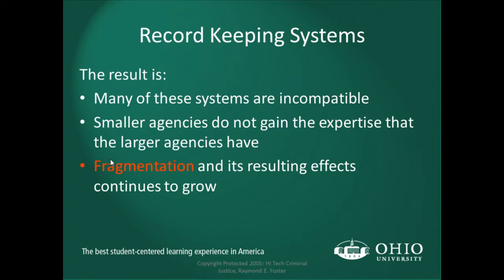The result is that many of these systems are incompatible. Smaller agencies do not gain the expertise that larger agencies have — that's clearly about money. Smaller agencies have limited budgets, so they're forced into tier two, off-the-shelf solutions. With that, a lot of their information gets compartmentalized — the evidence management system won't talk to the records management system, which won't talk to the cruiser video system. That leads to fragmentation, and the effect continues to grow. It's hard to get everything — one record, one person, one car — all in one handy place.